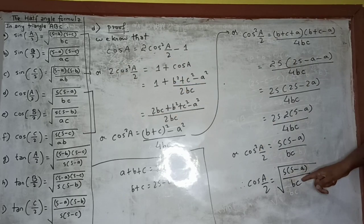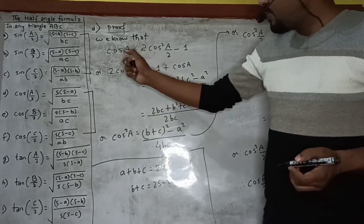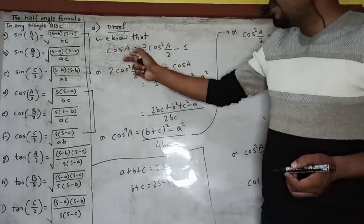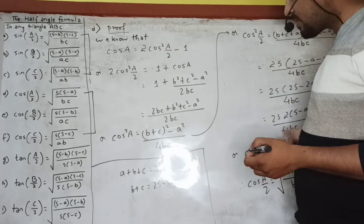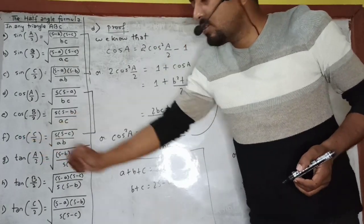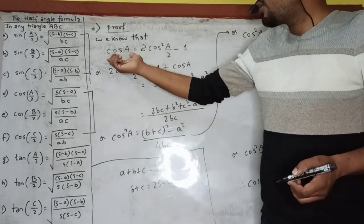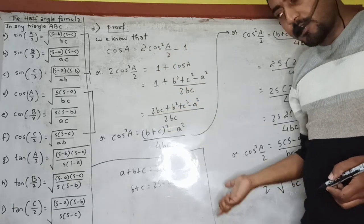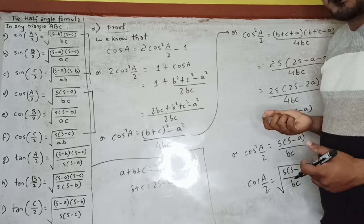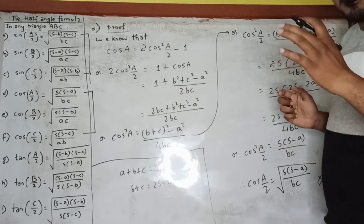So we have proved statement D. Similarly, to prove statement E — cos(B/2) — write cos B = 2 cos²(B/2) − 1 and follow the same process. And to prove statement F — cos(C/2) — open the formula cos C = 2 cos²(C/2) − 1 and follow the same process. Hope you got the point and understood every step.